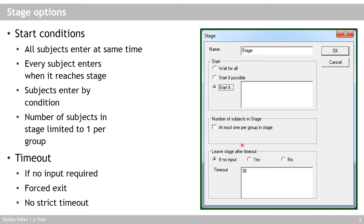The next area allows you to tell CETRI that only one person per group should be allowed into this stage. You can use the priority variable in the subjects table to tell CETRI in which order subjects should be allowed to enter the stage when they are waiting in the waiting screen.